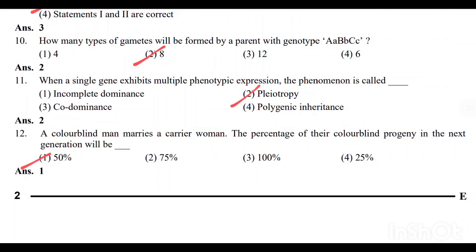Question number 10: How many types of gametes will be produced by a parent with genotype AABBCC? Option 2 — 8 — is the correct answer. Question number 11: When a single gene exhibits multiple phenotypic expression, the phenomenon is called pleiotropy. Option 2 is the correct answer.